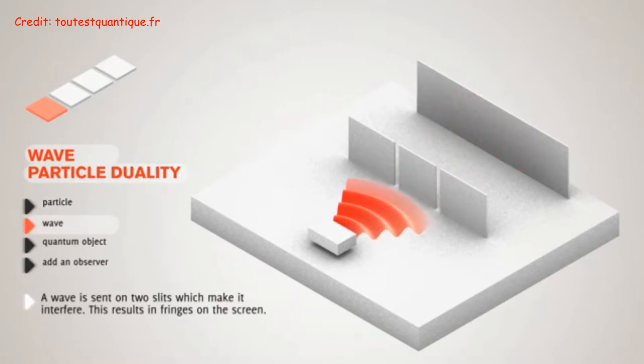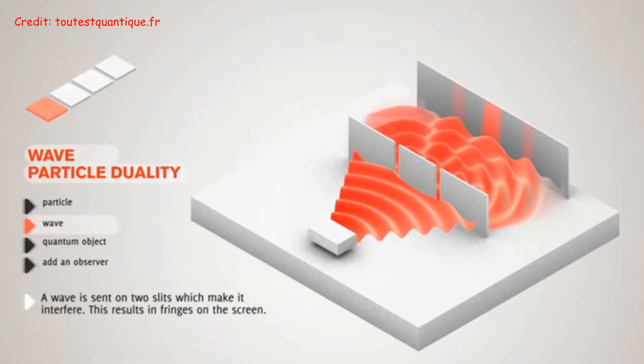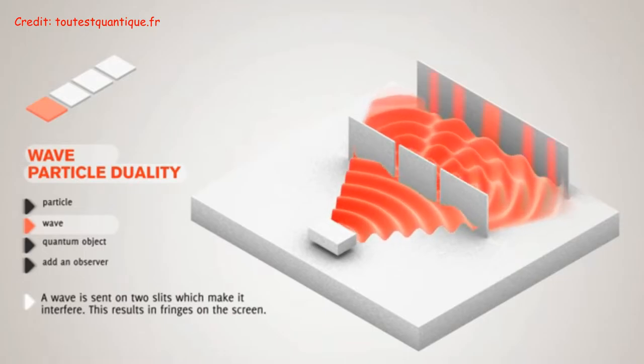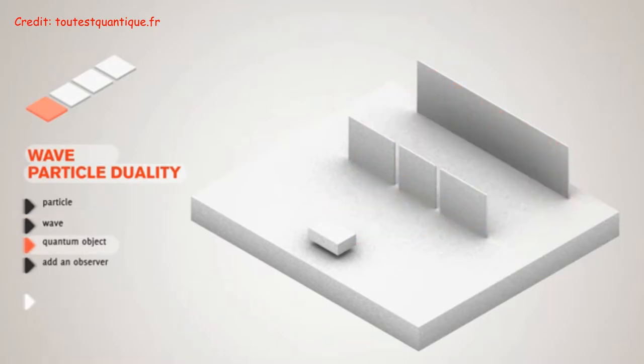Waves, however, are shot through the slits, and they diffract around the slits, and superimpose, destructively and constructively, to create the interference pattern on the screen.